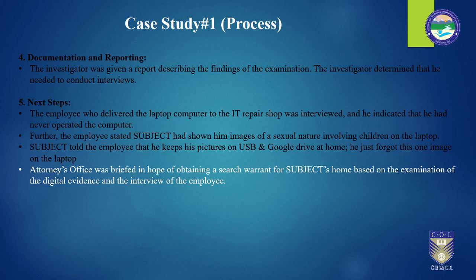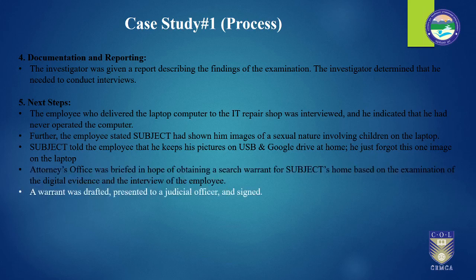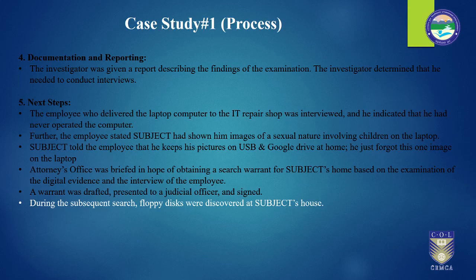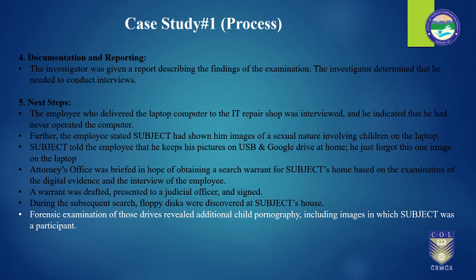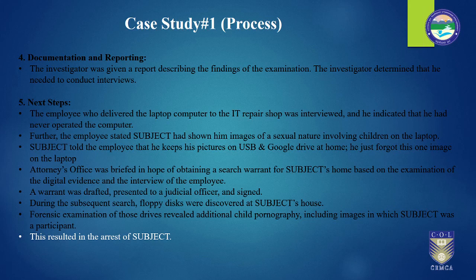The subject being accused would have told the employee that he keeps pictures on floppy disks or USB drives at home, and just forgot this one image on the laptop. This can be documented and reported. The attorney's office can be briefed in the hope of obtaining a search warrant for the subject's home based on the digital evidence examination and interviews. A warrant can then be drafted, presented to a judicial official, and signed. During a subsequent search, floppy disks, USB drives, or hard disks might be discovered in the subject's house. Forensic investigation of these drives would reveal additional child pornography, including images possibly showing the subject as a participant, which would result in his arrest.